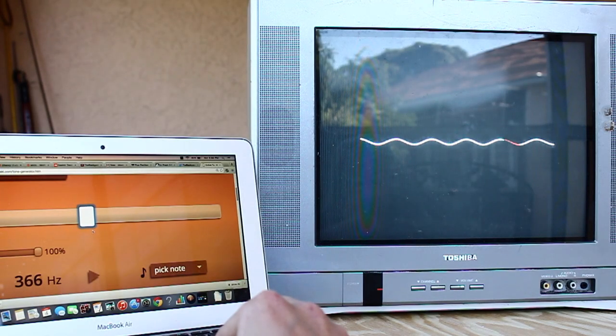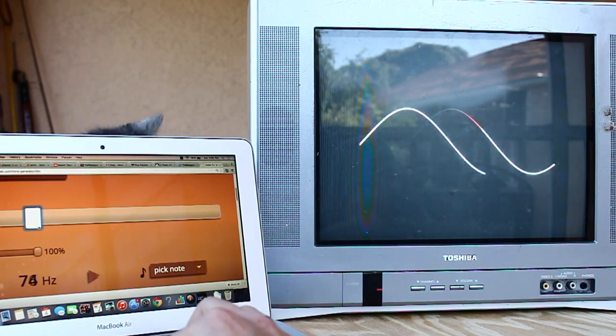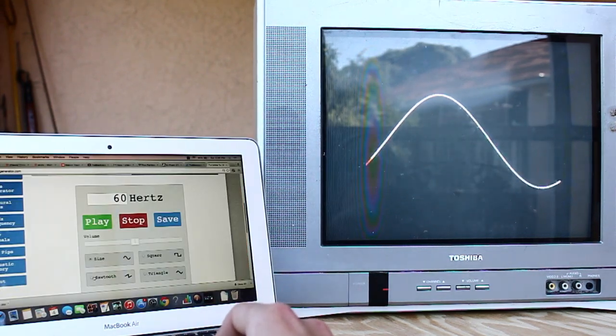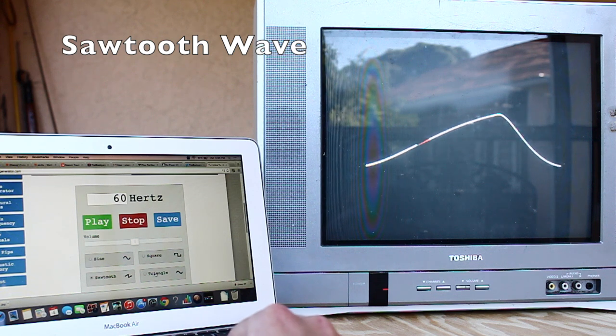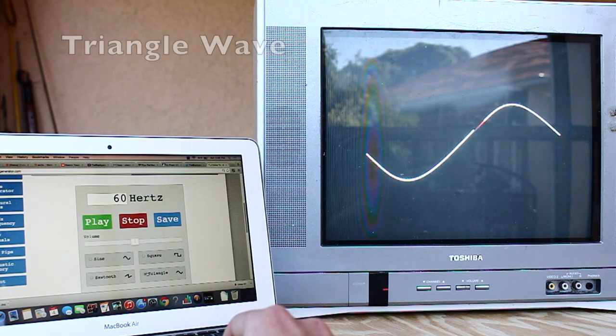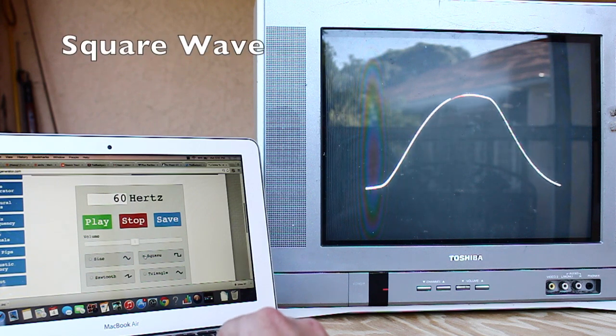Pull up an online tone generator and experiment with all the different waveforms that you can get. Now I thought this was pretty neat too. Not only can it play a sine wave, but it can also play sawtooth, kind of a triangle wave, and also a square wave.